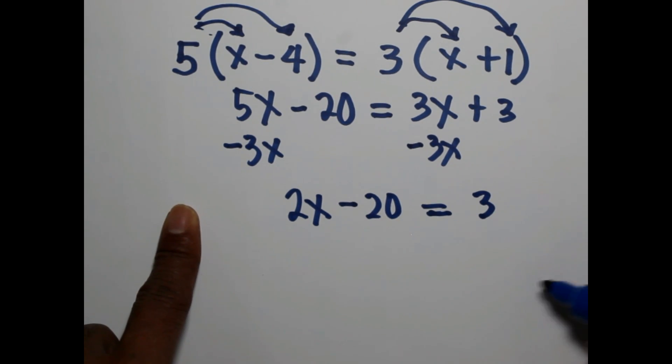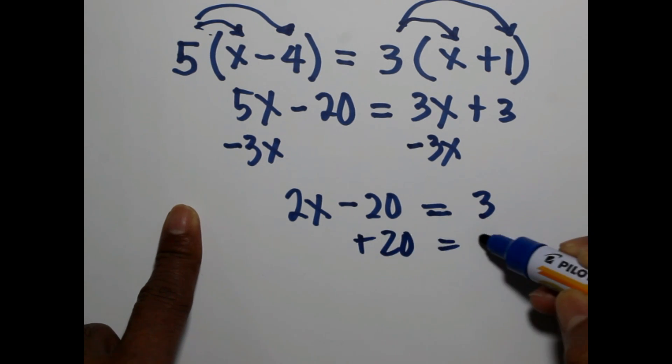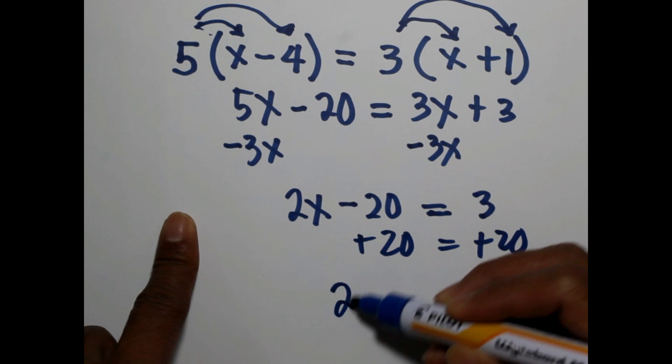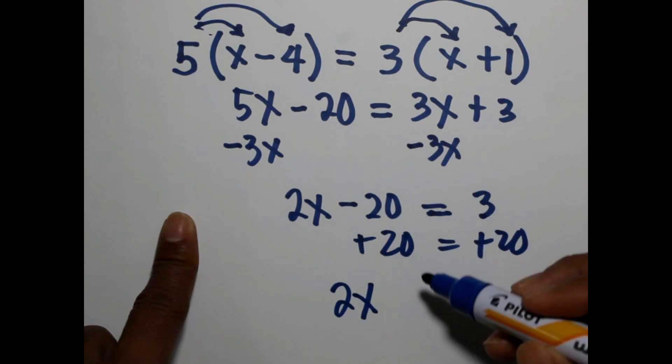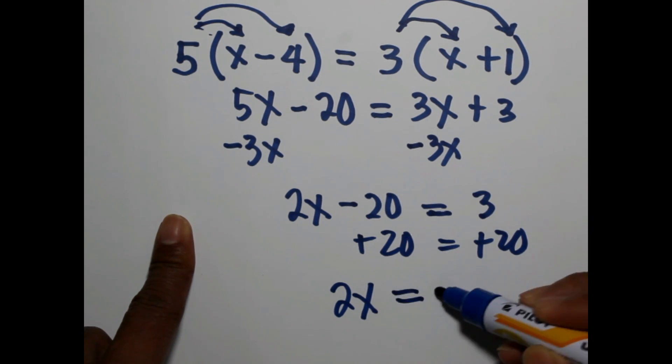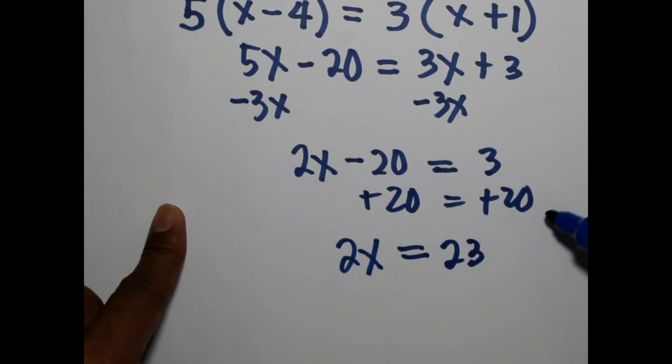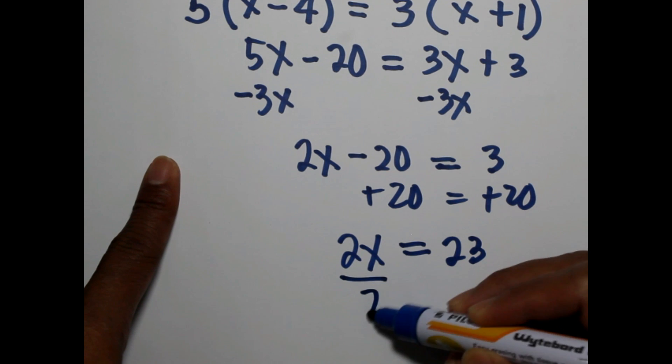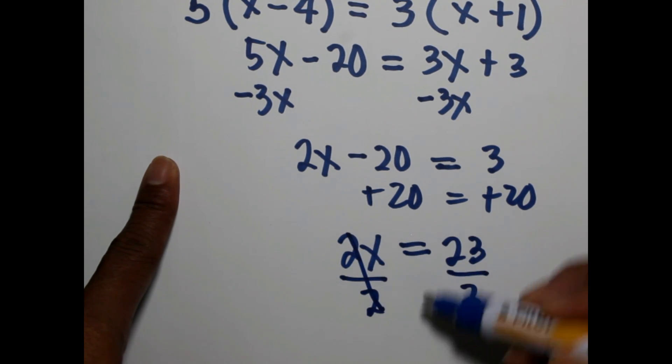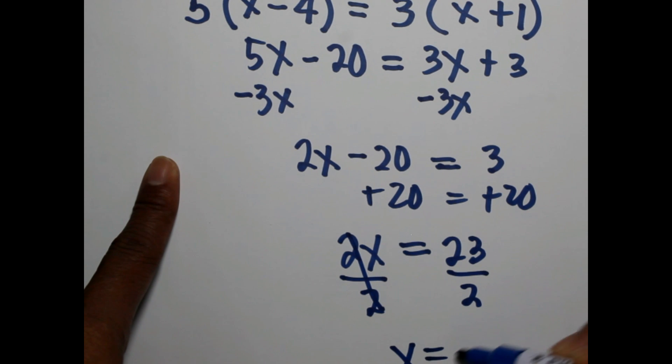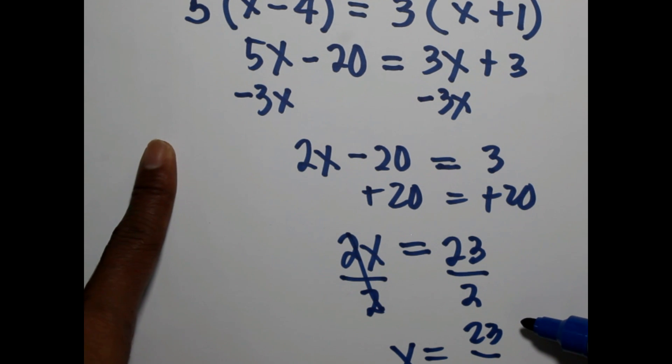We will eliminate negative 20 by adding 20 to both sides. So bring down 2x, negative 20 plus 20 that's 0, equals 3 plus 20. To solve for x, divide both sides by 2. So x now is equal to 23 over 2. This is non-reducible because 23 and 2 have no common factor. I would prefer an answer which is a fraction rather than a decimal. So final answer would be x equals 23 over 2.